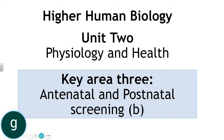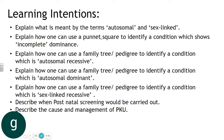In this video we're going to look at Higher Human Biology Unit 2, Physiology and Health, criteria 3: antenatal and postnatal screening, specifically section B, which is concerned with pedigrees, autosomal dominant, autosomal recessive, incomplete dominance from an autosomal point of view, and sex-linked recessive. Sex-linked dominant is not specified as one of the types of inheritance you need to know, but as a problem-solving topic it could be asked in the exam.